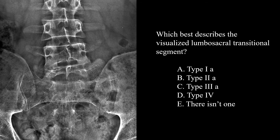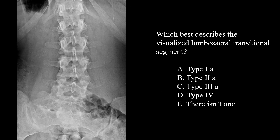Here we have a normal transverse process on one side and another that's enlarged, hypertrophied, and articulates with the sacrum — so this would be a Castelvei Type 2a, which best describes the visualized lumbosacral transitional segment. In another case, we see enlargement and fusion on one side and a normal transverse process obscured by some bowel gas on the other.